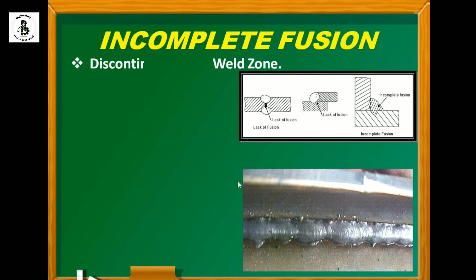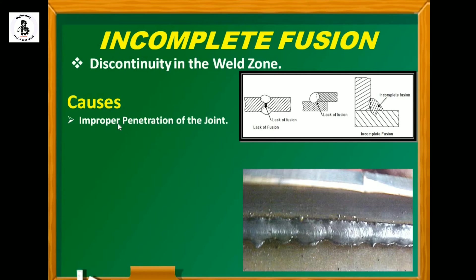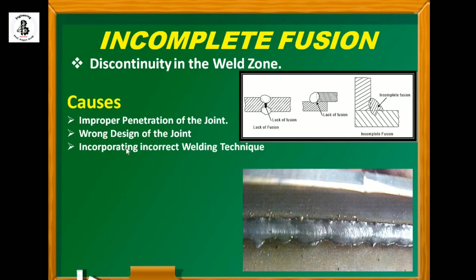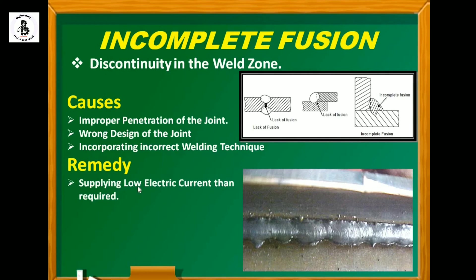Incomplete fusion is basically a discontinuity in the weld zone. The causes include improper penetration of the joint, wrong design of the joints, and incorrect welding techniques. The remedies for lack of fusion include supplying the correct low electric current as required and cleaning the joint properly.